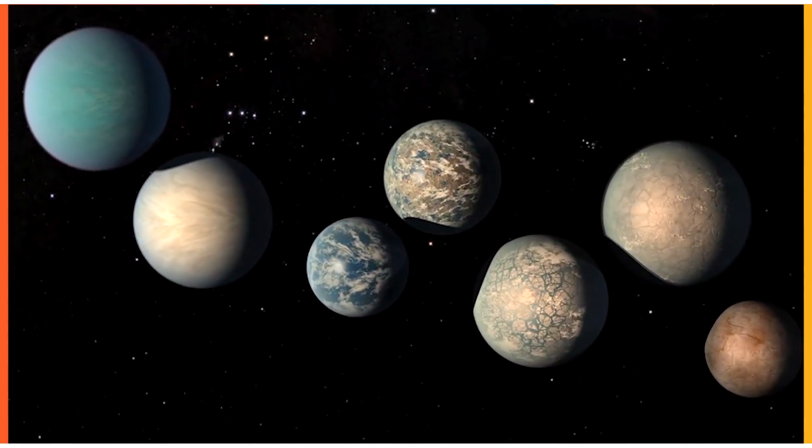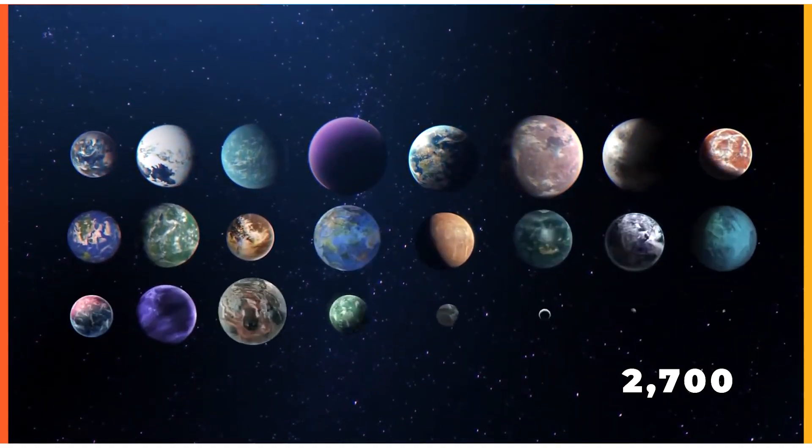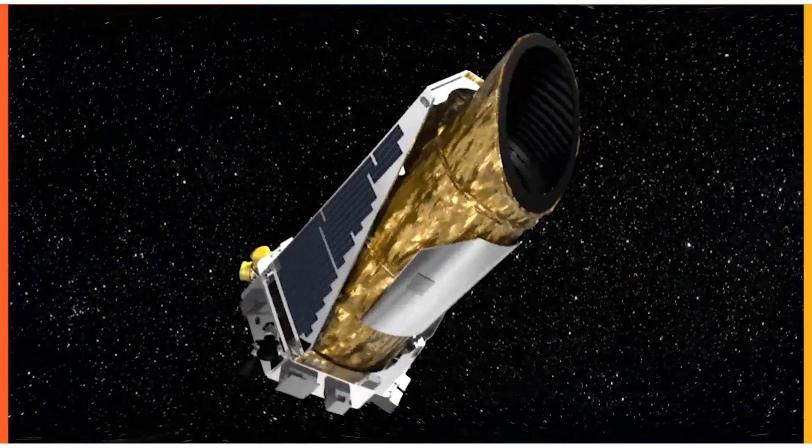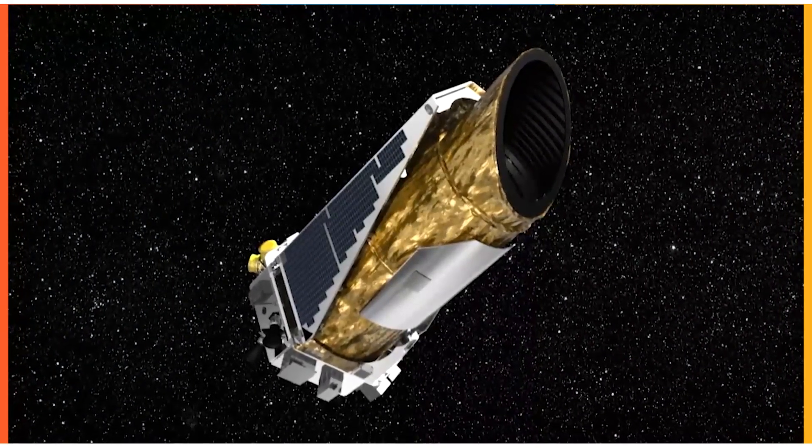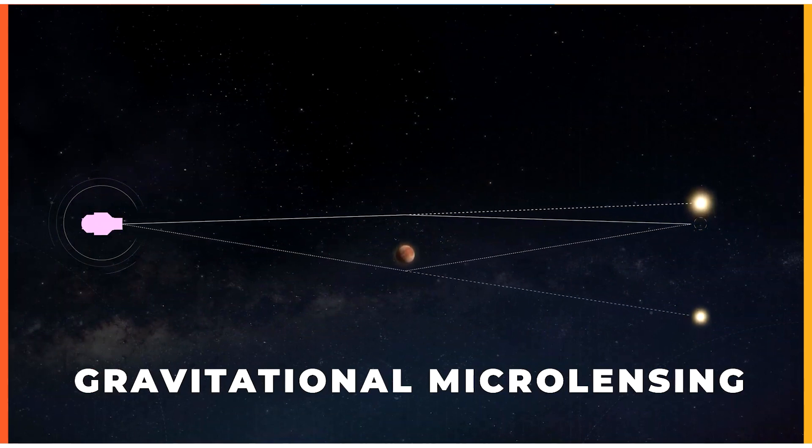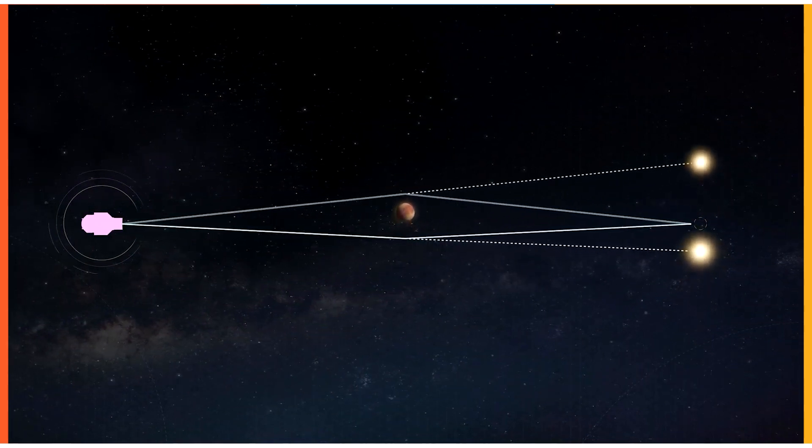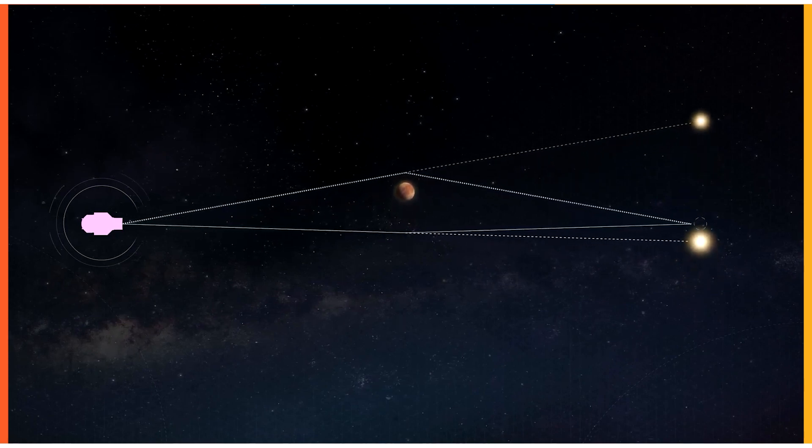The exoplanetary system is twice as far away as any ever observed by Kepler, which discovered over 2,700 confirmed planets before shutting down operations in 2018. The system was discovered via gravitational microlensing, which was predicted by Einstein's theory of relativity, and it is the first planet detected from space in this manner.